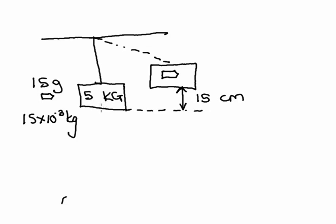The wooden block is not moving, which means the initial velocity for the wooden block is going to be 0 meters per second. My bullet will definitely have an initial velocity, so I'm going to make to the right positive for this question. The wooden block is suspended from a long strong cord, the bullet remains stuck in the block, and the block-bullet system swings to a height of 15 centimeters above the equilibrium position.